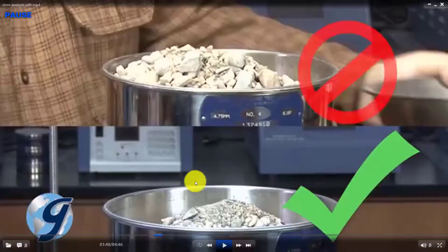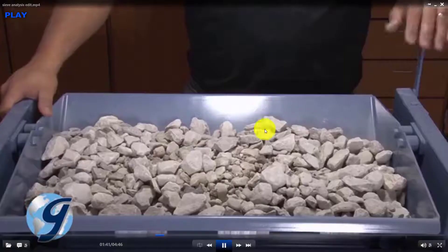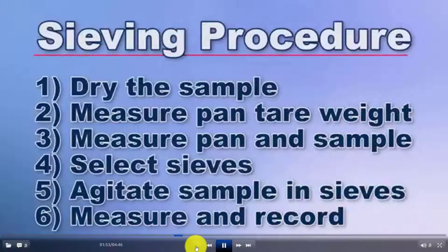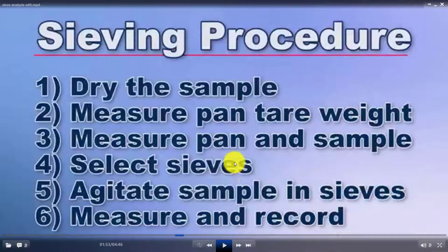The mass retained on each sieve must not exceed 40% of total mass. If it does, you must obtain a representative sample using a splitter according to ASTM C702. The procedure is: dry the sample, tare the balance, weigh the sample, place it into the sieve stack, agitate for 10 minutes on the sieve shaker, then record the mass retained on each sieve. After recording, proceed to the desk for calculations.